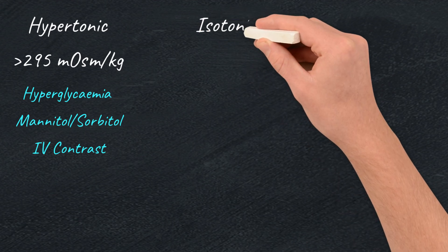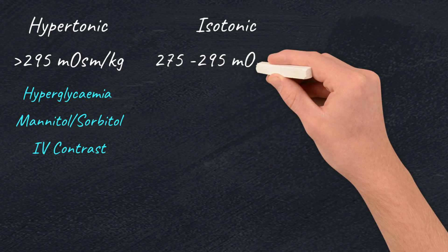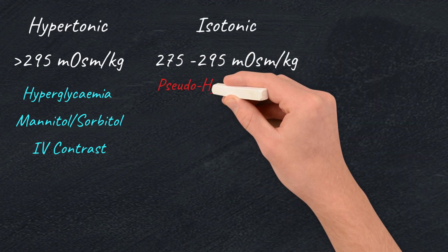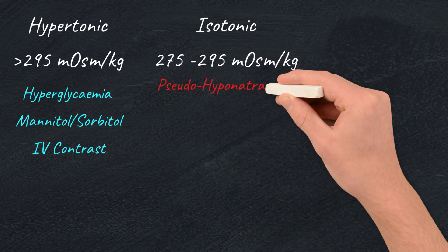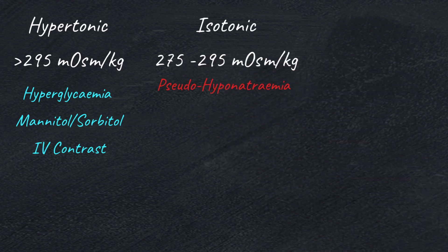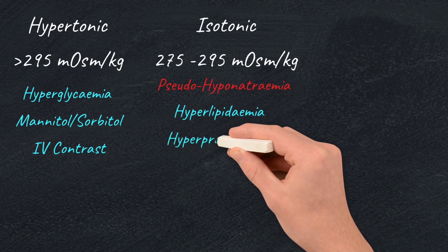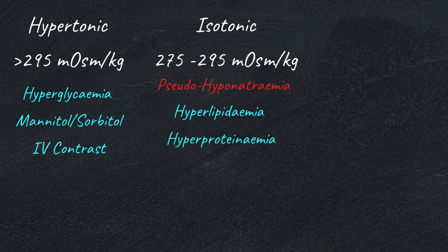Isotonic hyponatremia, also called pseudo-hyponatremia, is due to high levels of lipids and proteins in the blood that cause lab errors in sodium levels. So assess for hyperlipidemia and hyperproteinemia.